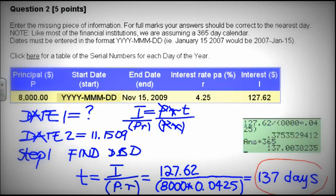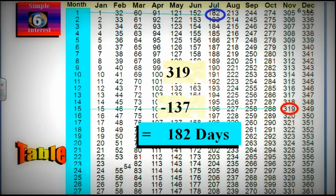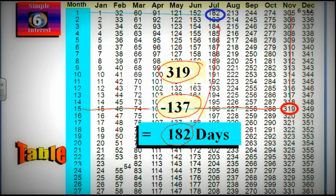So the 137 days, we want to find from the November 15th, subtract 137 days to give us start date. November 15th is number corresponding to November 15th, that's 319. So we plug 319 then minus 137 that we just calculated. That gives you 182.